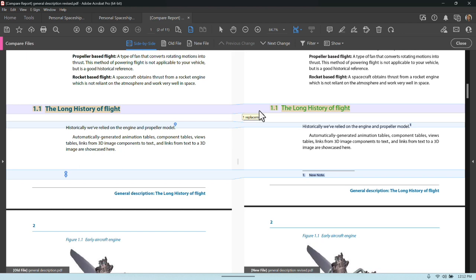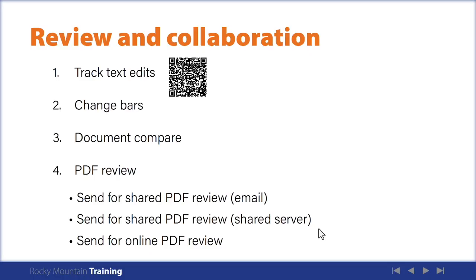Document Compare is worth adding to your workflow — it's a great way to see what you've changed and make sure you haven't changed anything extra, particularly if you're not working with an editor. Now, let's talk about working with an editor who doesn't have FrameMaker or doesn't want to use it. There are three different ways to initiate a PDF review: send for a shared PDF review via email, send for a shared PDF review on a shared server, or send for an online PDF review.